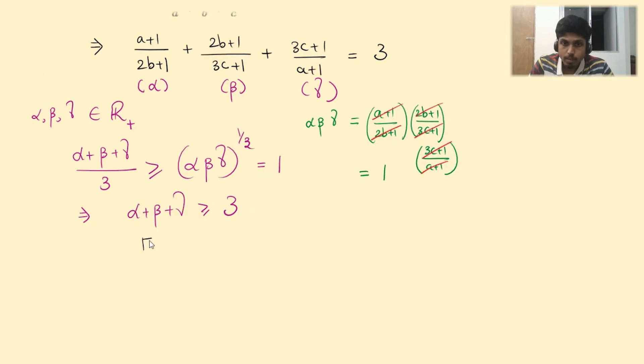So hence we conclude that equality holds in AM-GM. But when does equality hold in AM-GM? It happens if and only if all the variables are equal, and they are equal to 1, because we have that their product is 1. So if all 3 are equal, it must be 1.